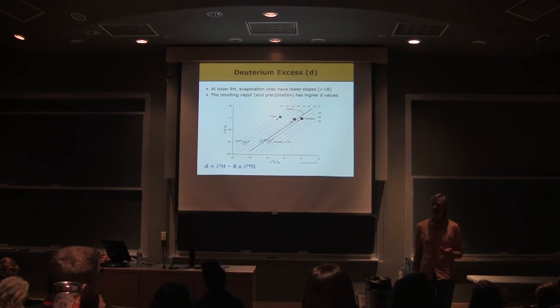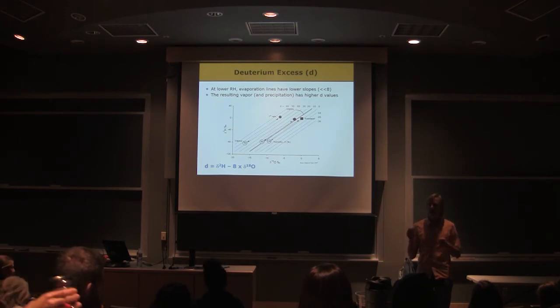Okay, so what's going to change about the global meteoric water line? The slope or the intercept? Let's start there. Okay, we've got both answers. The right answer is the intercept.